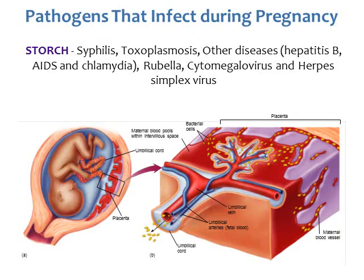Pathogens can also infect during pregnancy. These diseases are grouped under the acronym STORCH: syphilis, toxoplasmosis, other diseases (such as hepatitis B, AIDS, and chlamydia), rubella, cytomegalovirus, and herpes simplex virus. These are pathogens that can get into the fetus through the placenta.